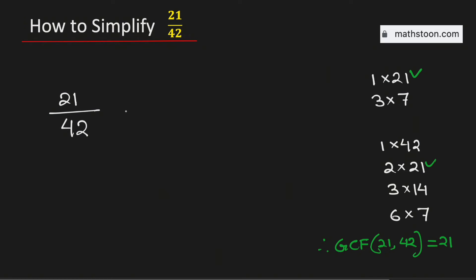Now to simplify this fraction we will divide both 21 and 42 by their greatest common factor which is 21. And if we do it we will get 1 over 2.